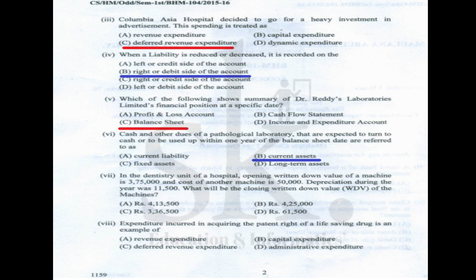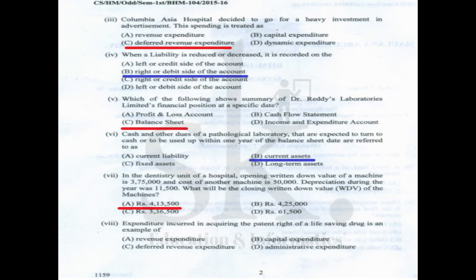Question number seven: opening written down value of a machine is ₹3,75,000, cost of another machine is ₹50,000, and depreciation during the year was ₹11,500. Closing WDV = 3,75,000 + 50,000 − 11,500 = ₹4,13,500. The correct option is A.